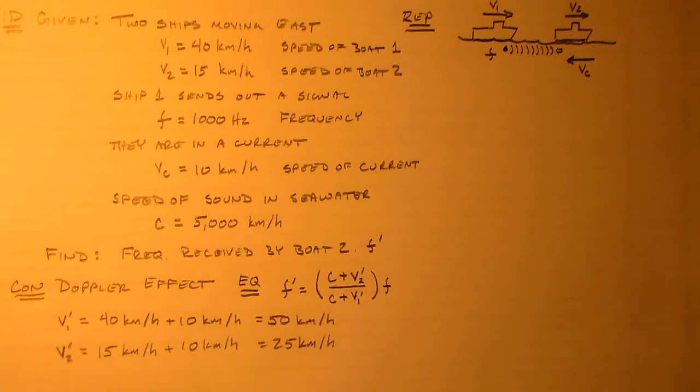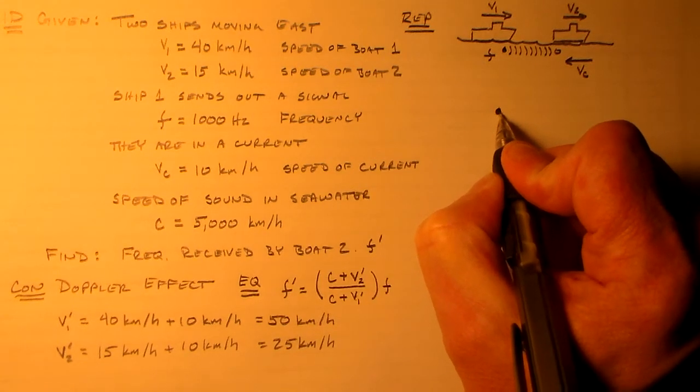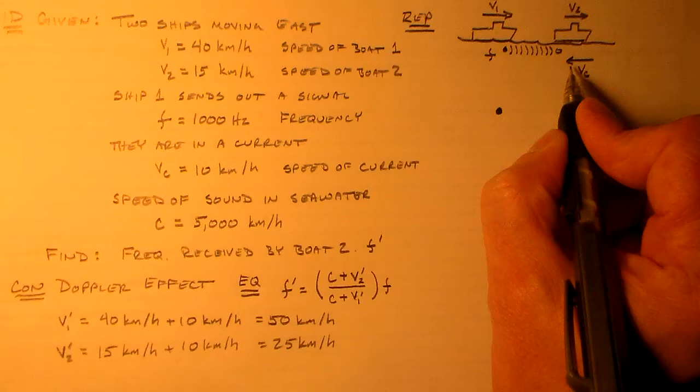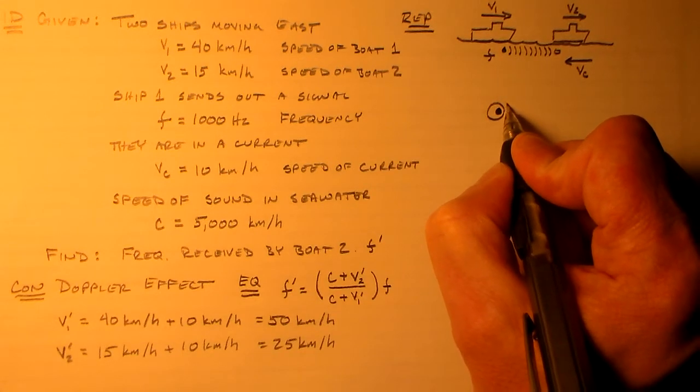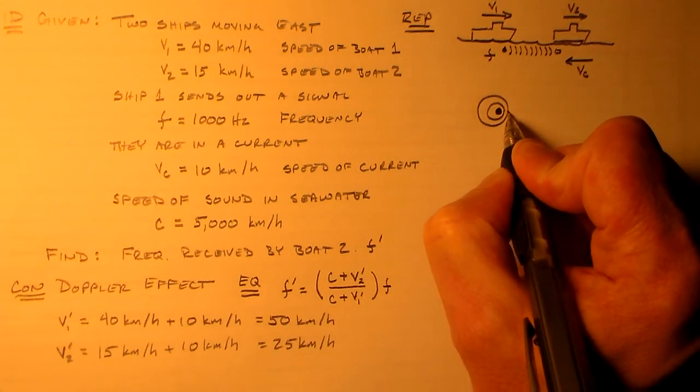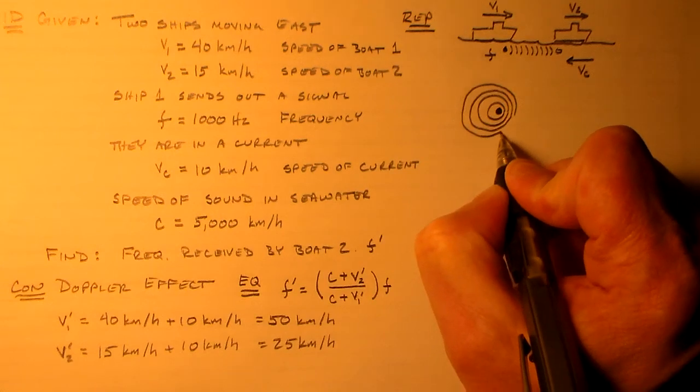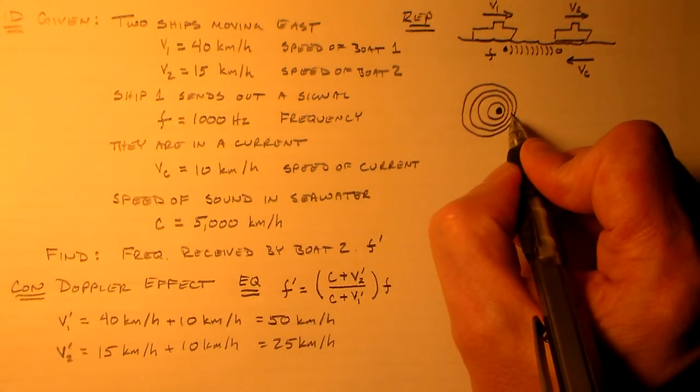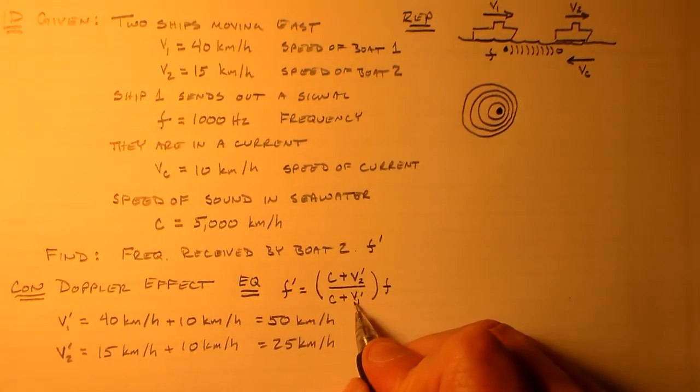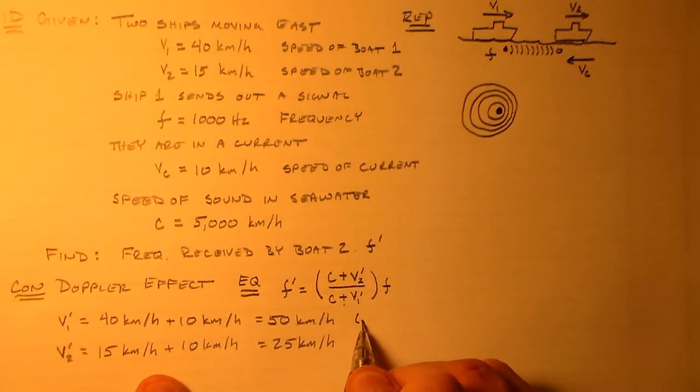Now we also need to figure out what the signs are. So to do that, let's say we've got our source here. What do the, as far as the medium is concerned, what do these radiating waves look like? Well, they look kind of like this. So as far as the source is concerned, this frequency is greater. So as far as V1 is concerned, the frequency is going to have to be greater. For this, for the frequency to be greater than it is, this is going to have to have a negative number. So V1 is actually negative.